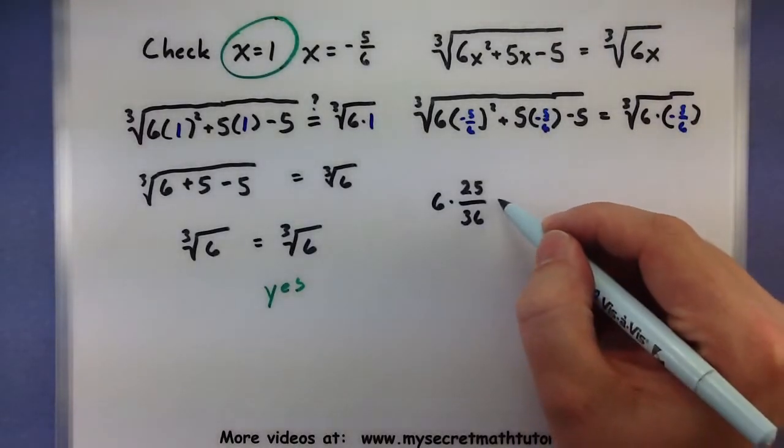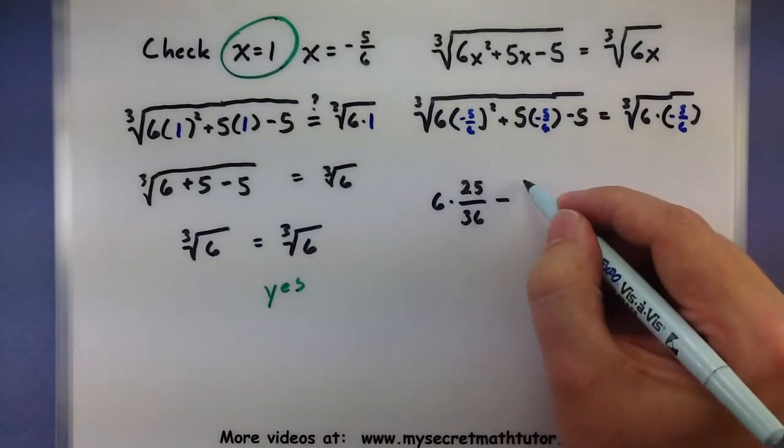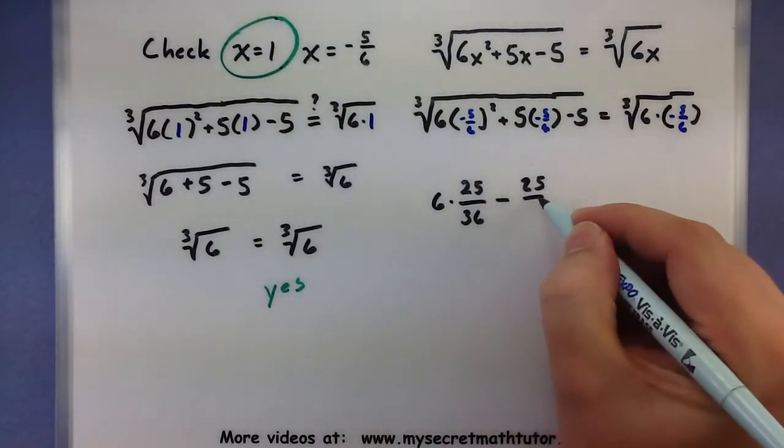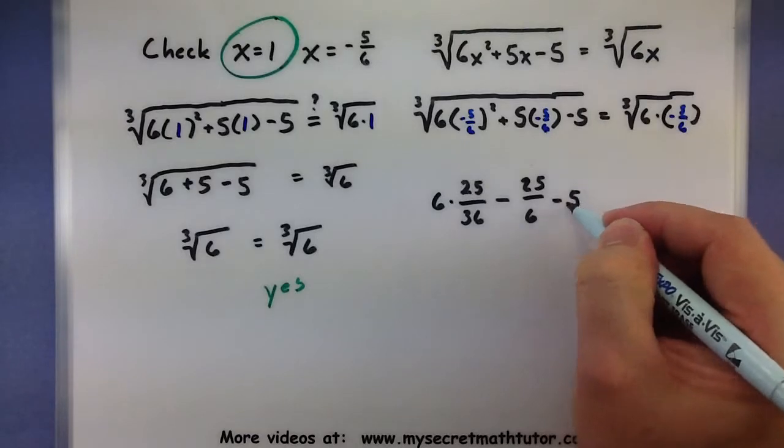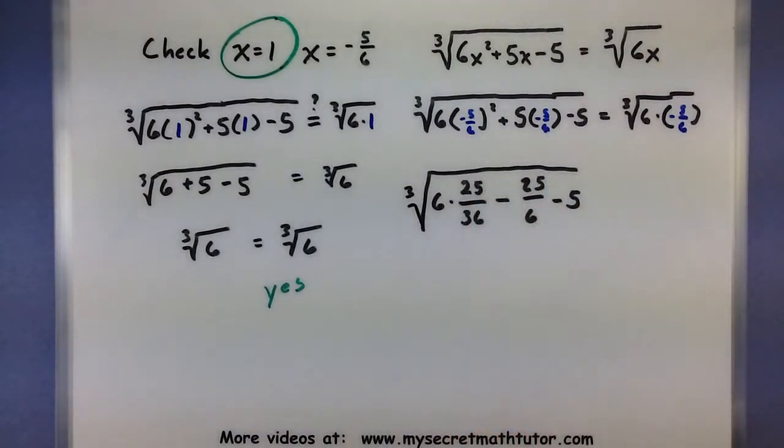Let's see, over here we'll have a minus because I have a positive and a negative being multiplied. 25 over 6, and then of course I'm subtracting 5 away from that, and the cubed root of all of that. Okay, so that looks good.